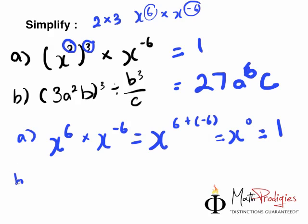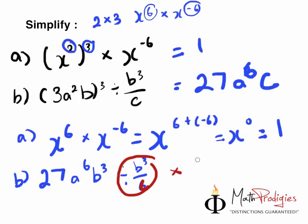For B, a little tricky. Open it up first. 3 to the power 3. 3 times 3 is 9 times 3 is 27. A squared, the whole thing to the power 3, 2 times 3, so you get A to the power 6. And B whole thing, you get cubed, and divided by B to the power 3 over C. Now, how do you do this? B to the power 3 over C is also the same as saying, oh sorry, C, right? It's also the same as saying times C over B cubed.